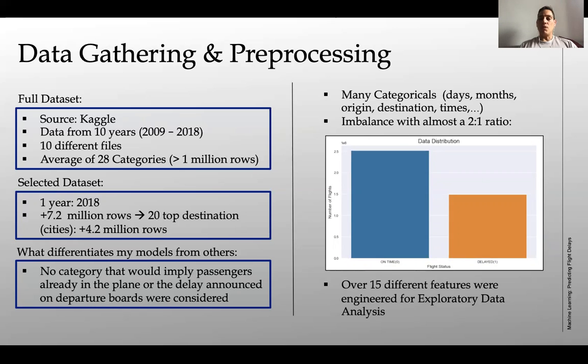So what differentiates my model from everything that has been done and has been published online? No category that would imply passengers already in the plane or a delay announced on the departure boards were actually considered. The result of this is that my accuracy is going to be lower, but at the same time this might be a little bit more useful because you won't have to be sitting on the plane or being already in the airport.